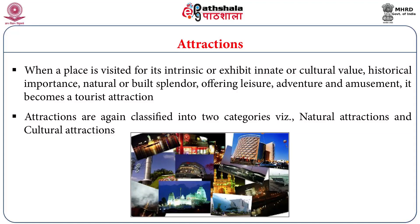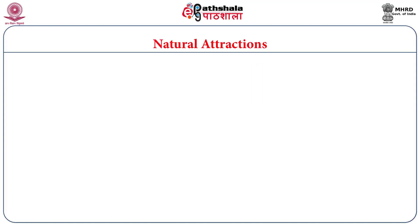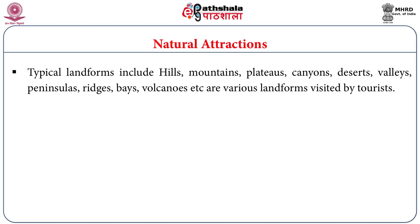Attractions are classified into two categories: natural attractions and cultural attractions. Natural attractions include typical landforms such as hills, mountains, plateaus, deserts, valleys, peninsulas, ridges, bays, volcanoes, and canyons visited by tourists.